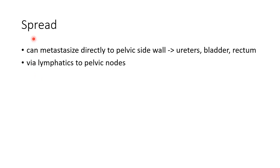Now let us see about the spread of carcinoma cervix. Carcinoma cervix can metastasize directly to pelvic side walls and can involve the uterus, bladder, and rectum. It can also spread via lymphatics to pelvic nodes.